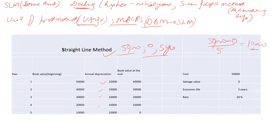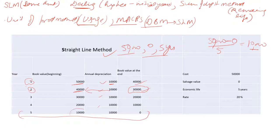At the beginning of the first year, the book value is rupees 50,000. We deduct 10,000 as depreciation, leaving 40,000 at the end — this closing balance becomes the opening balance for year two. Again we deduct 10,000 to get 30,000, and this continues. At the end of the fifth year, the remaining book value is 10,000; after charging 10,000 depreciation, the scrap value becomes zero.